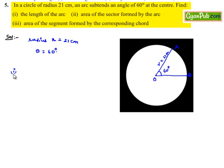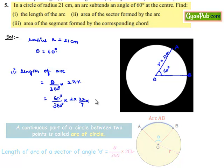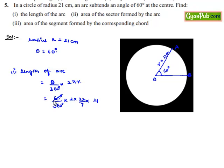First, we are asked to find the length of the arc. The formula for the length of the arc is (θ/360°) × 2πr, where θ is the angle subtended by the arc at the center. Substituting θ = 60°, π = 22/7, and r = 21: 60 divides into 360 six times, 7 goes into 21 three times, 3 goes into 6 twice, leaving us with 22. Therefore, the length of the arc is 22 cm.